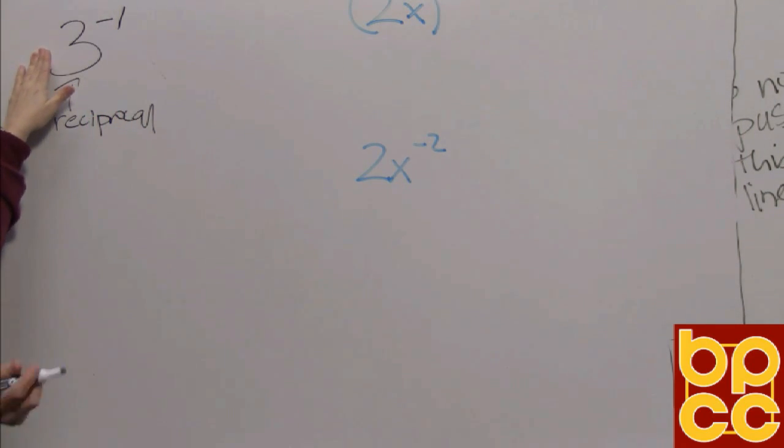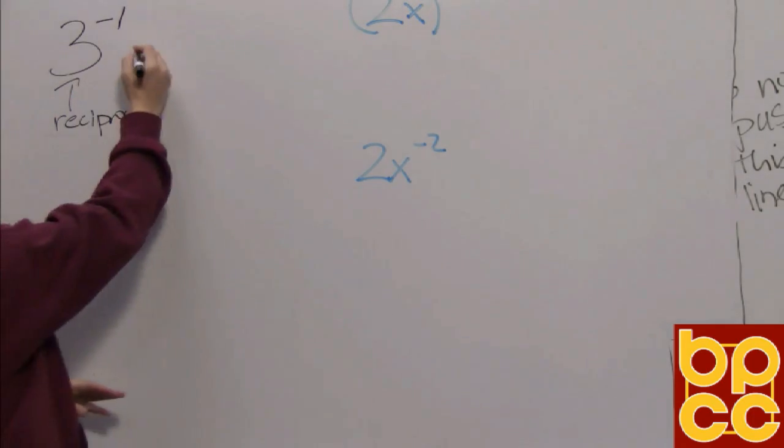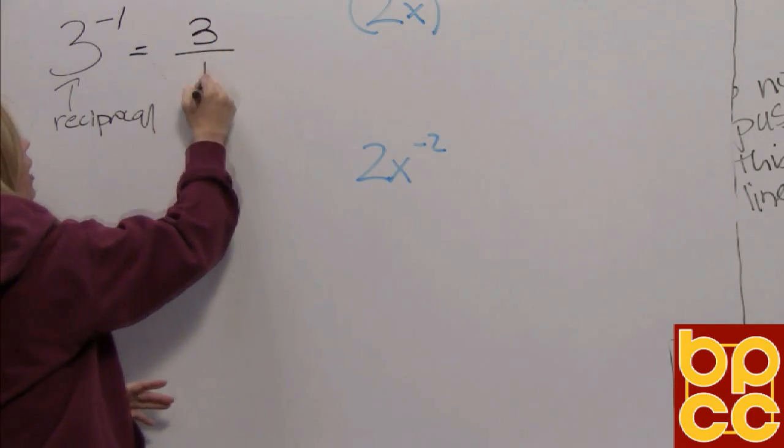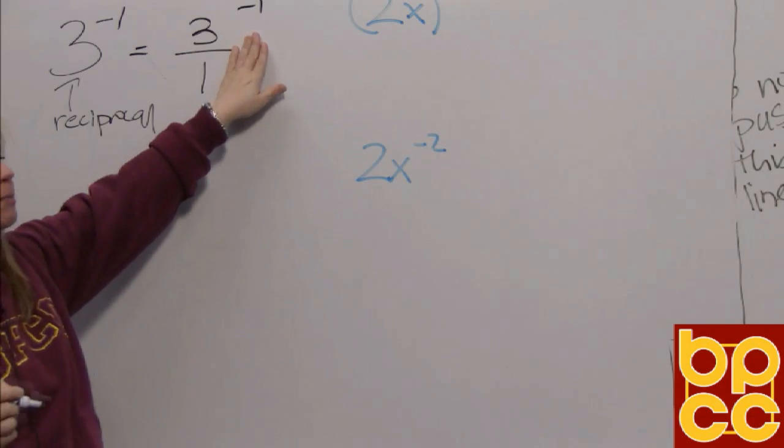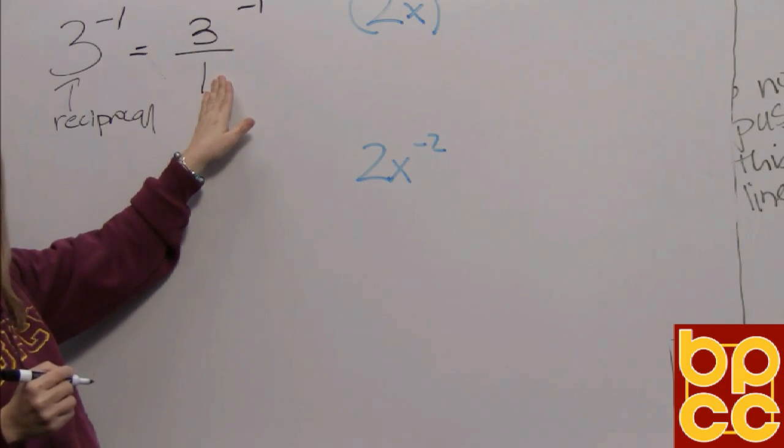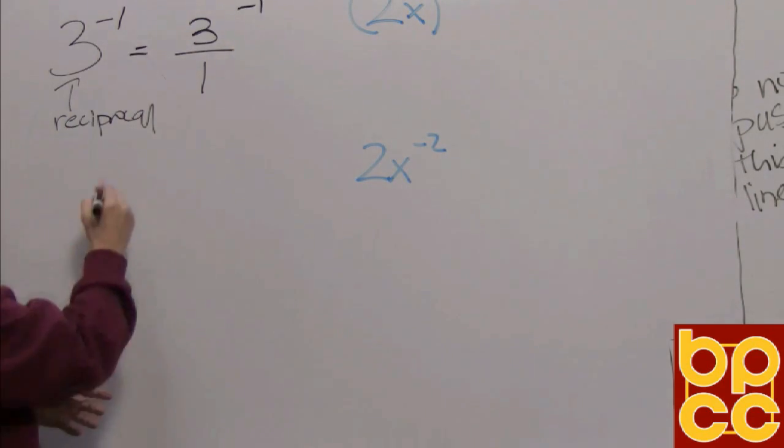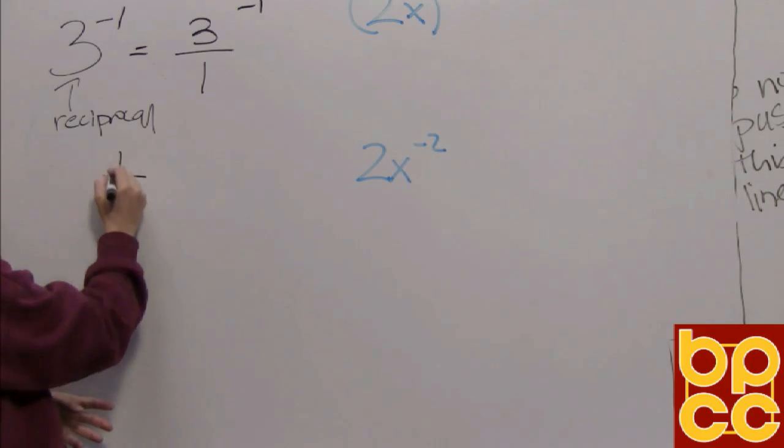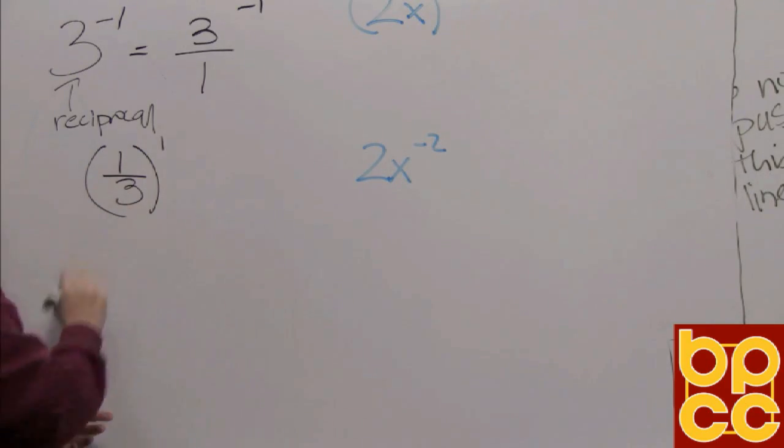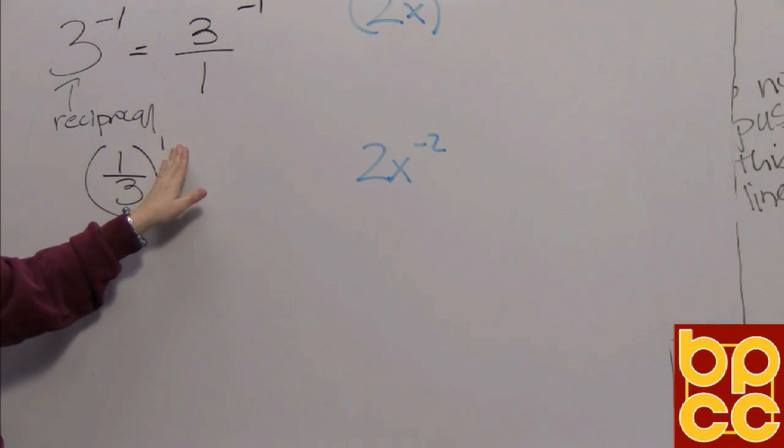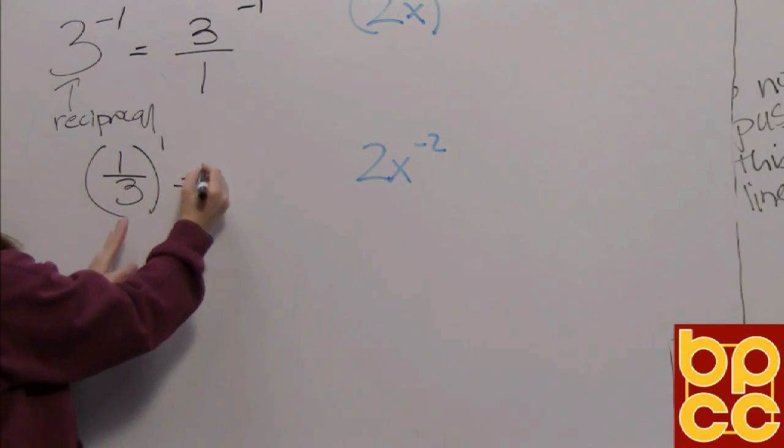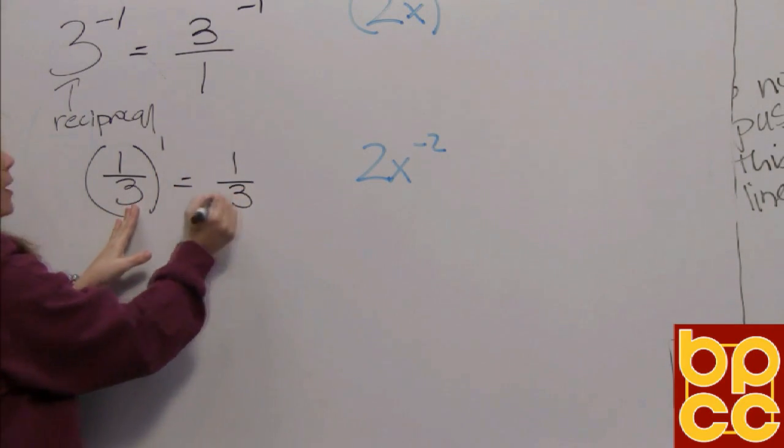And if you remember, reciprocal means to flip a fraction. So this number 3 is really 3 over 1. So to make this exponent positive we do the reciprocal of the base. We flip 3 over 1. We get 1/3 and now our exponent is positive. And we understand what that means. 1/3 to the first power means to write that base one time.